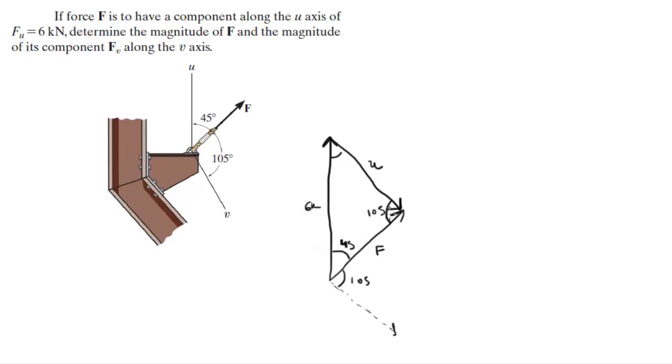And with those two angles, we can find the last angle, because we know that all three inside angles of a triangle is 180. So this angle comes out to be 30 degrees.